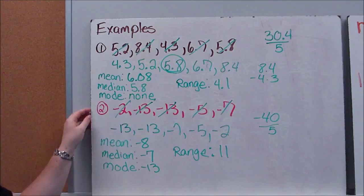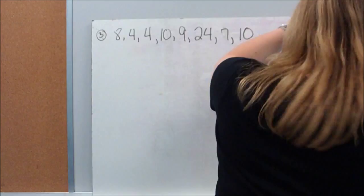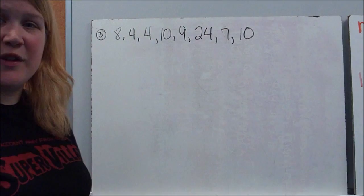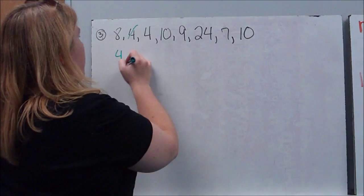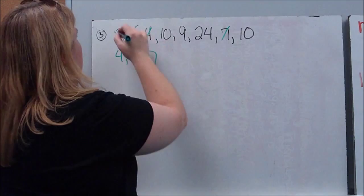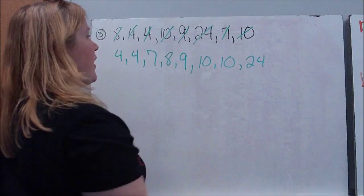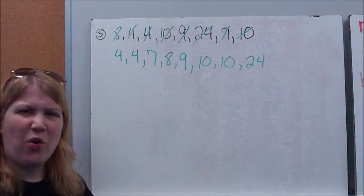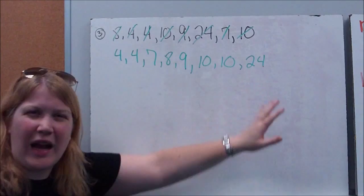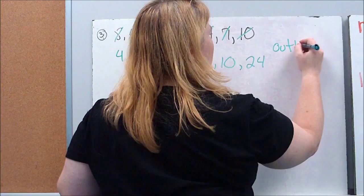All right. One more example, and this one will have an outlier, so we'll talk a little bit more about that. Don't mind the loud noises. I just knocked something over. So again, the very first thing that we want to do is we want to put our data in order. So I've got a 24. Well, if you'll notice, between 4 and 10, there's not a whole lot of difference. There's a lot of numbers in between them. They're pretty close. You'll notice 24 kind of seems like the odd man out. So what I have now is what we would call an outlier. My outlier is 24.